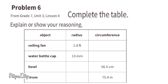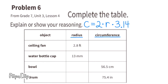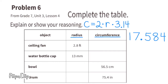Problem 6 (from Unit 3 Lesson 4): Complete the table with the object's radius and circumference, using C = 2 × r × π, with π ≈ 3.14. For the ceiling fan with radius 2.8 feet: 2 × 2.8 = 5.6, then 5.6 × 3.14 ≈ 17.584 feet, which rounds to approximately 17.6 feet.